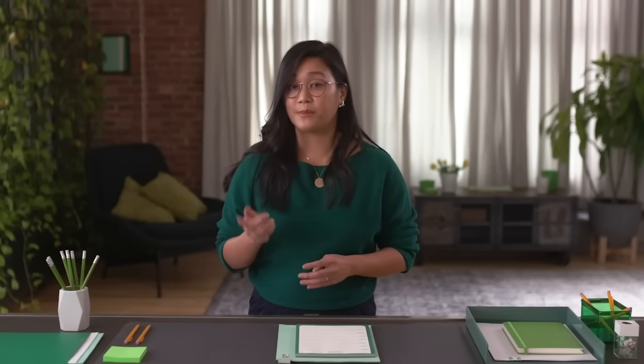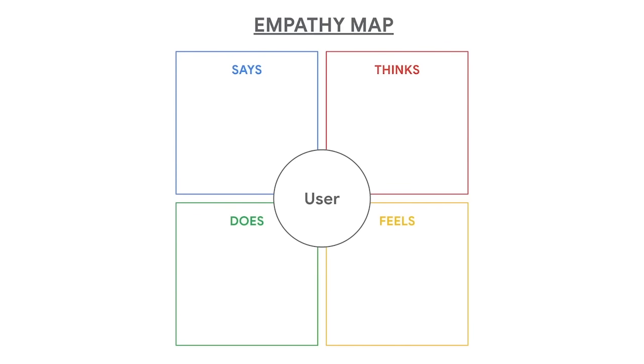Let's think back to empathy maps. An empathy map is an easily understood chart that explains everything designers have learned about a type of user. Empathy maps help UX designers understand a user's behavior when interacting with a product. Empathy maps focus on four main motivations of users.